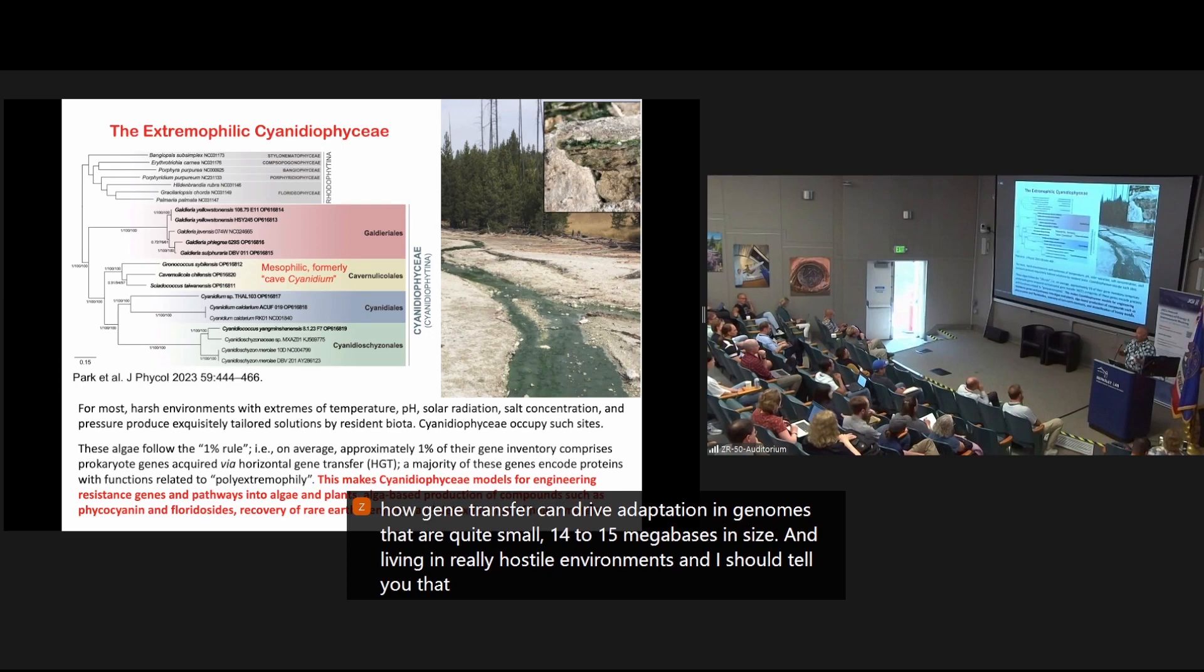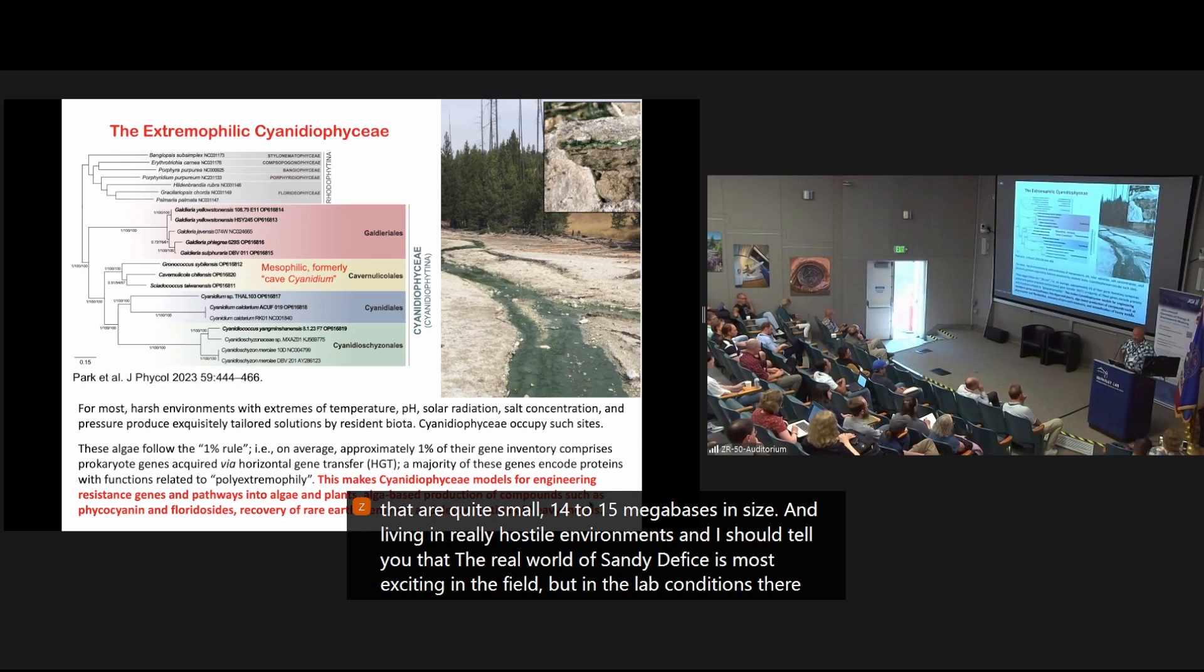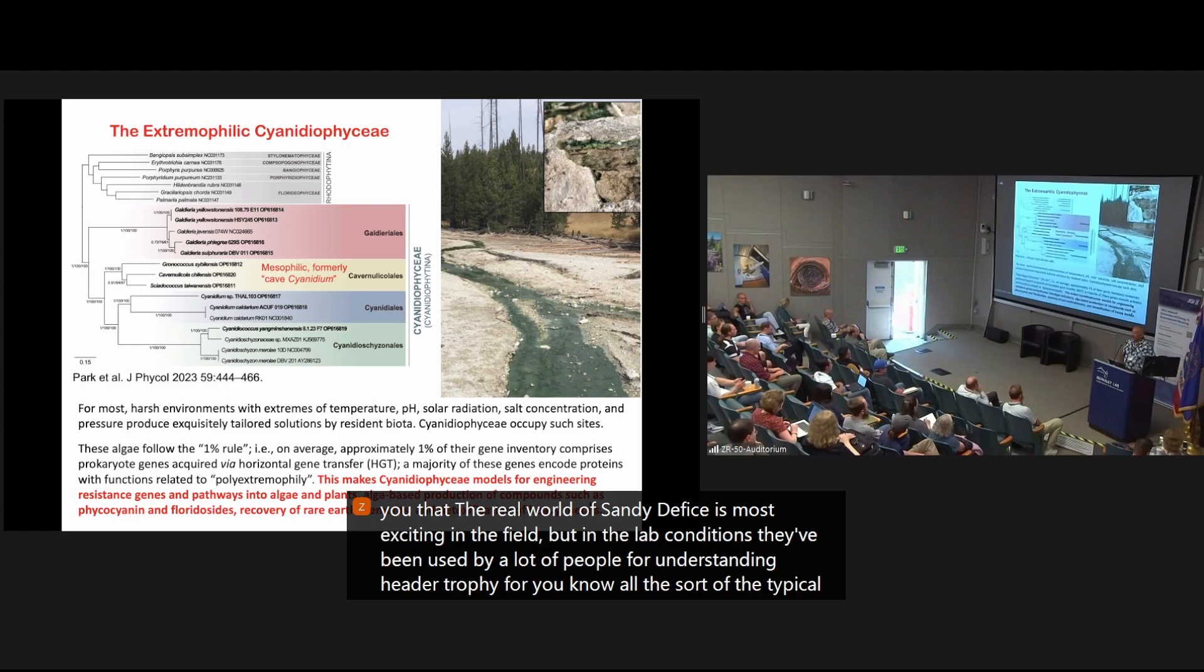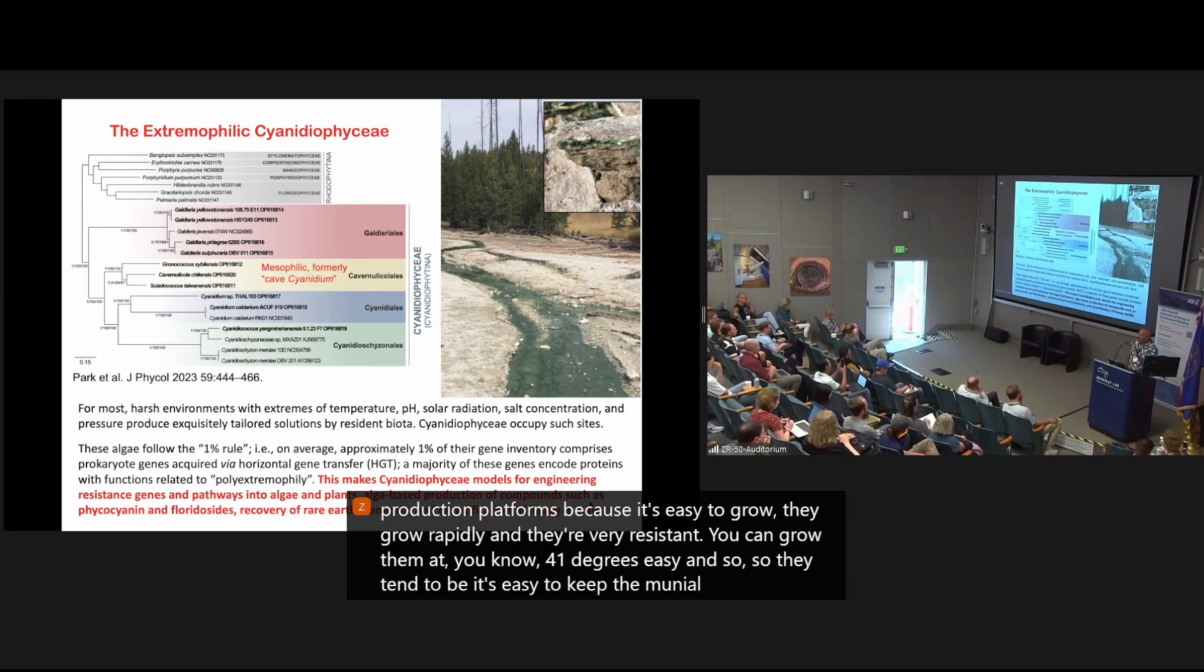So we did our work at Lemonade Creek in Yellowstone National Park, which I'll talk about today, as well as with cultures that are available from around the world. And in our past work, it's shown that these red algae have something we refer to as the 1% rule, that is that about 1% of the gene inventory is derived from prokaryotic sources. So it's really exciting to see how gene transfer can drive adaptation in genomes that are quite small, 14 to 15 megabases in size, and living in really hostile environments. And I should tell you that the real world of cyanidioficea is most exciting in the field. But in the lab conditions, they've been used by a lot of people for understanding heterotrophy, for all the sort of typical production platforms, because it's easy to grow, they grow rapidly, and they're very resistant. You can grow them at 41 degrees easy. And so they tend to be, it's easy to keep the uni-algal line clean. So there's a huge literature on the culture-based analysis of these guys.